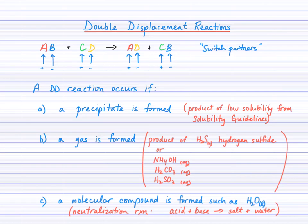Double displacement reactions. You'll find this pattern familiar from grade 10. We begin with two reactants, two compounds, and the products are the result of switching the cations and anions around in the reactants. A and C are the cations. Originally A is partnered with B and C is partnered with D.